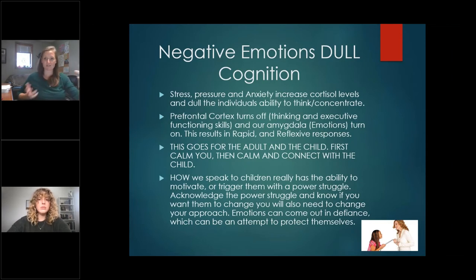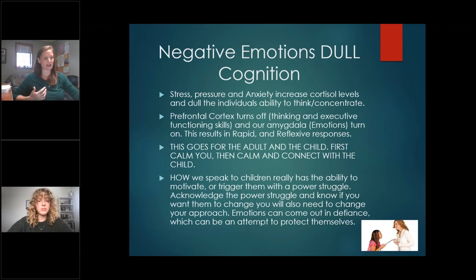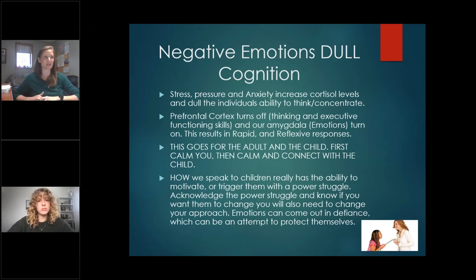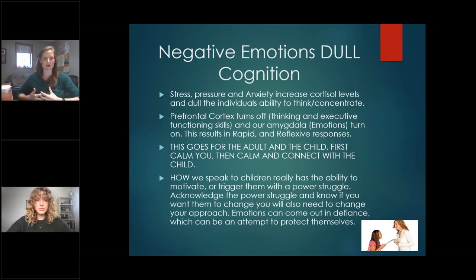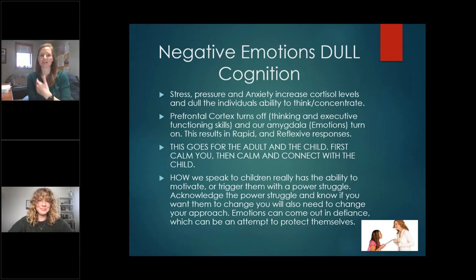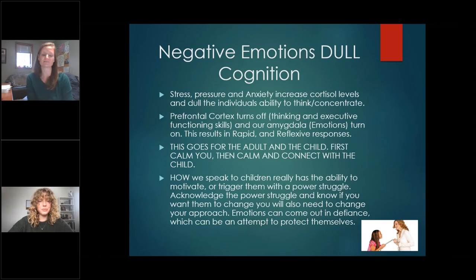The prefrontal cortex pretty much shuts off under a lot of stress, so thinking and executive functioning skills can't be accessed — we run on rapid, reflexive responses: fight, flight, freeze, or fib. We see fibbing a lot in younger kids: they try to avoid consequences because they know they're going to get in trouble, they feel shame and embarrassment, and with all that cortisol they just can't think it through. To help regulate emotions, don't withhold information you already know. Instead of 'Did you draw on the wall?' say 'I saw you draw on the wall, let's go clean it up together' — be specific about the facts.